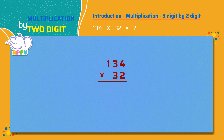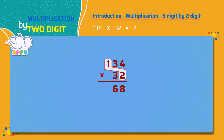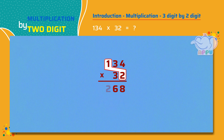First, we multiply the number in the ones place by two, which is four times two equals eight. Next, we multiply the number in the tens place by two, which is three times two equals six. Now, we multiply the number in the hundreds place by two, which is one times two equals two.